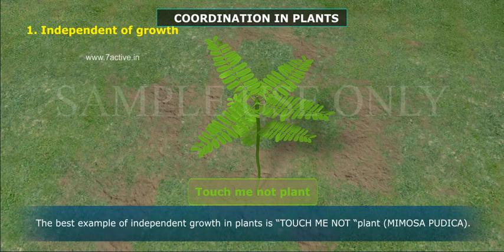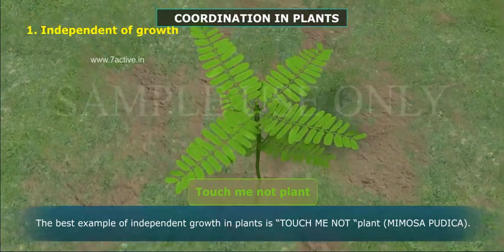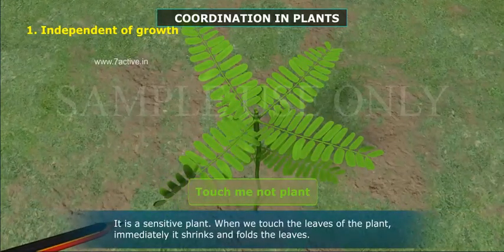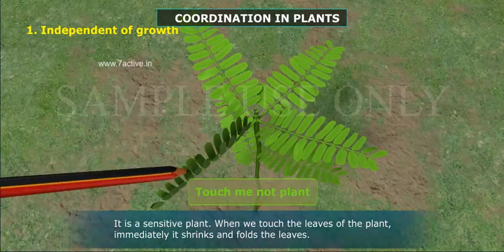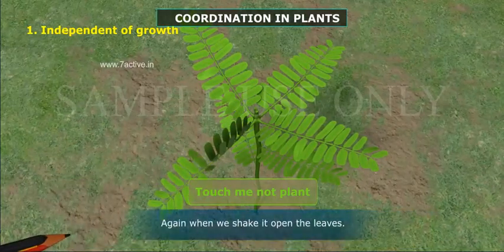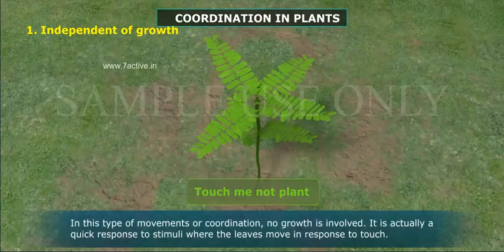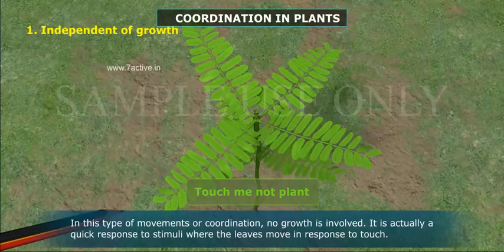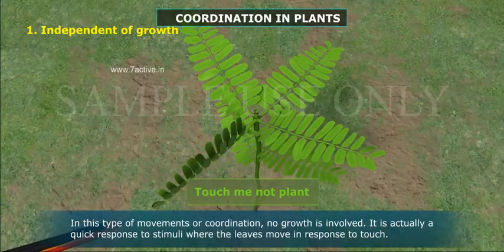The best example of growth-independent movement in plants is the Touch Me Not plant, Mimosa pudica. It is a sensitive plant. When we touch the leaves of the plant, it immediately shrinks and folds the leaves. Again when we shake it, it opens the leaves. In this type of movement or coordination, no growth is involved. It is actually a quick response to stimuli where the leaves move in response to touch.